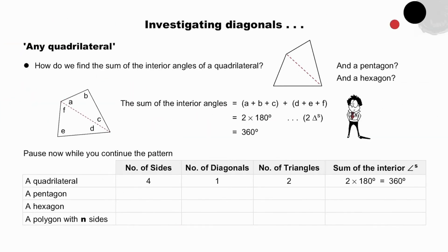Investigating diagonals. How do we find the sum of the interior angles of a quadrilateral? And a pentagon? And a hexagon? Pause to try, as you notice that the diagonal divides the quadrilateral into two triangles. The sum of the interior angles equals a plus b plus c plus d plus e plus f. Therefore equal to two times 180 degrees, the sum of the angles of each triangle. And the sum of the interior angles of any quadrilateral is therefore equal to 360 degrees.